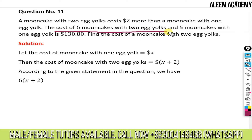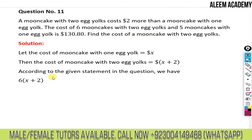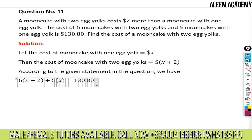And five mooncakes with one egg yolk — the cost of one mooncake with one egg yolk is x, so five mooncakes with one egg yolk will be five times x. This total equals $130.80. So we have the equation: 6(x + 2) + 5x = 130.80.